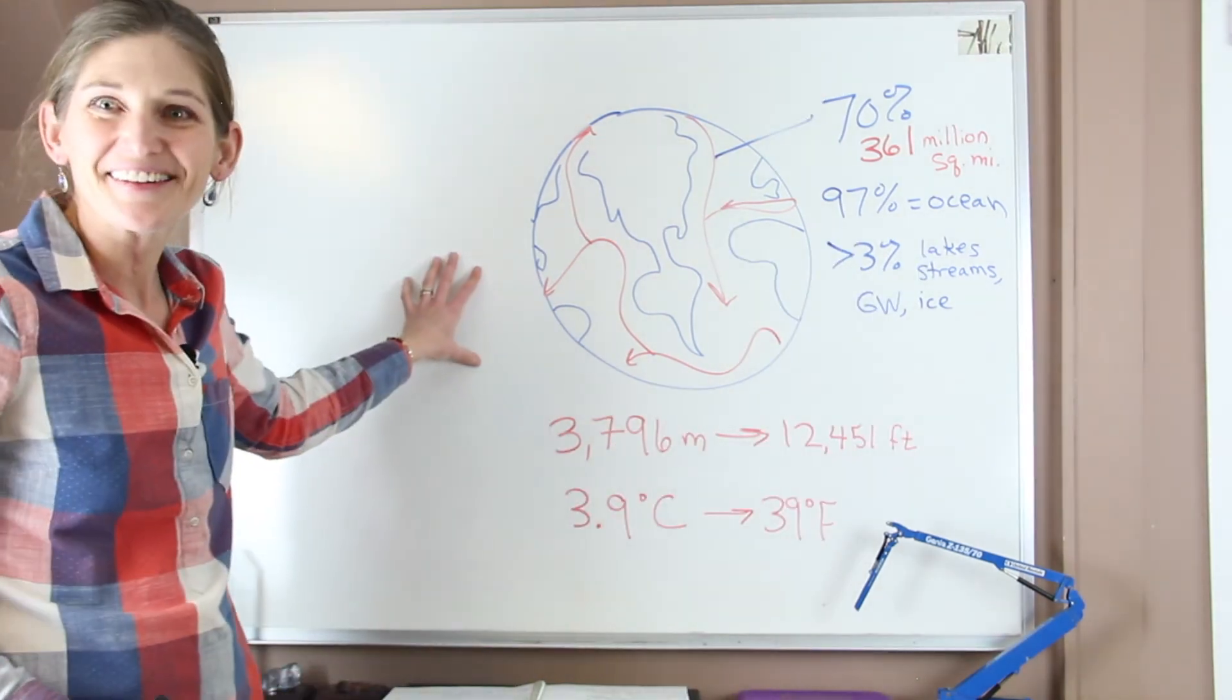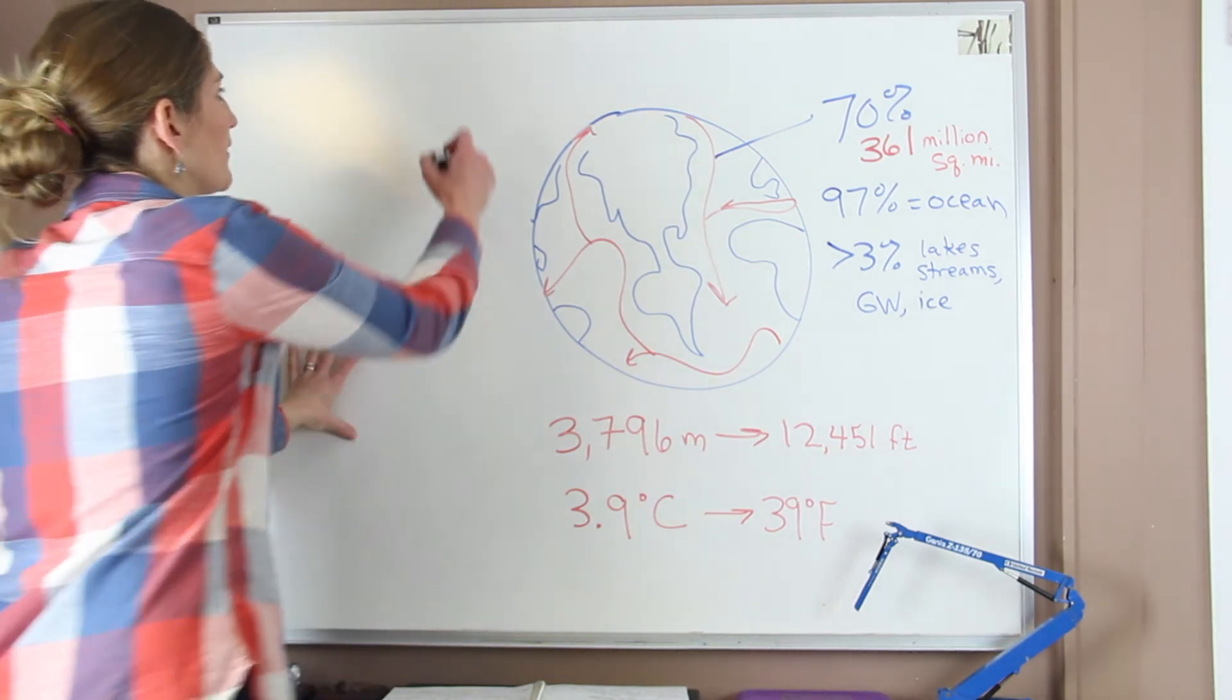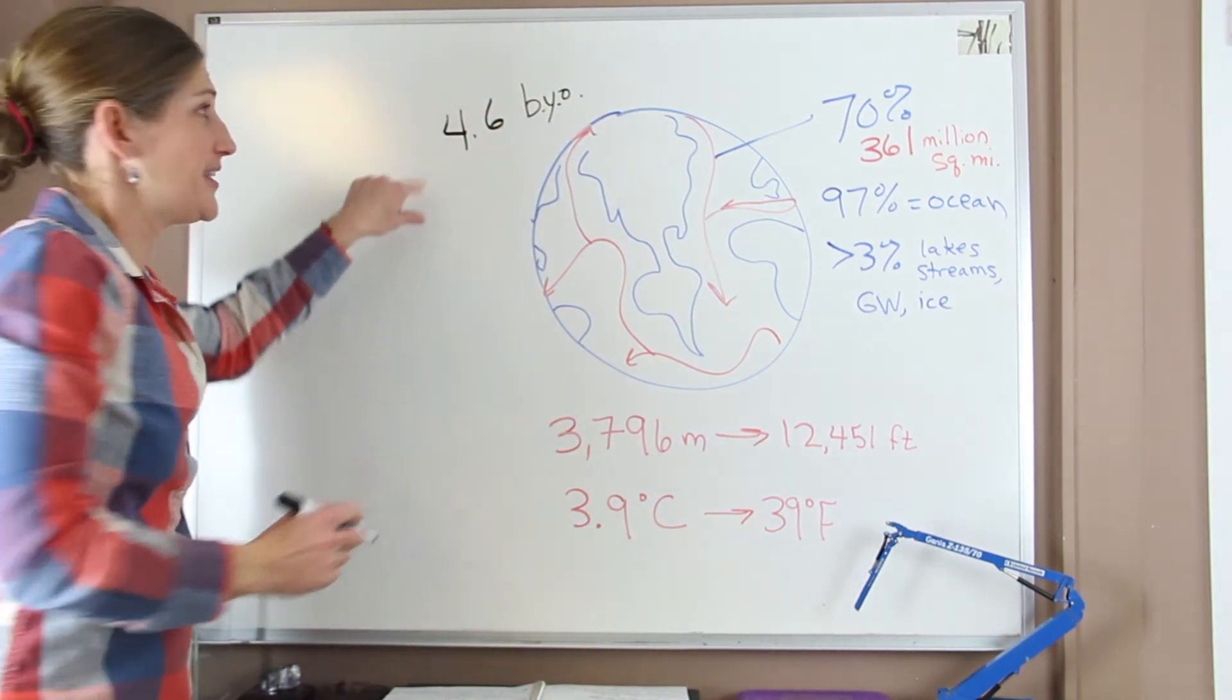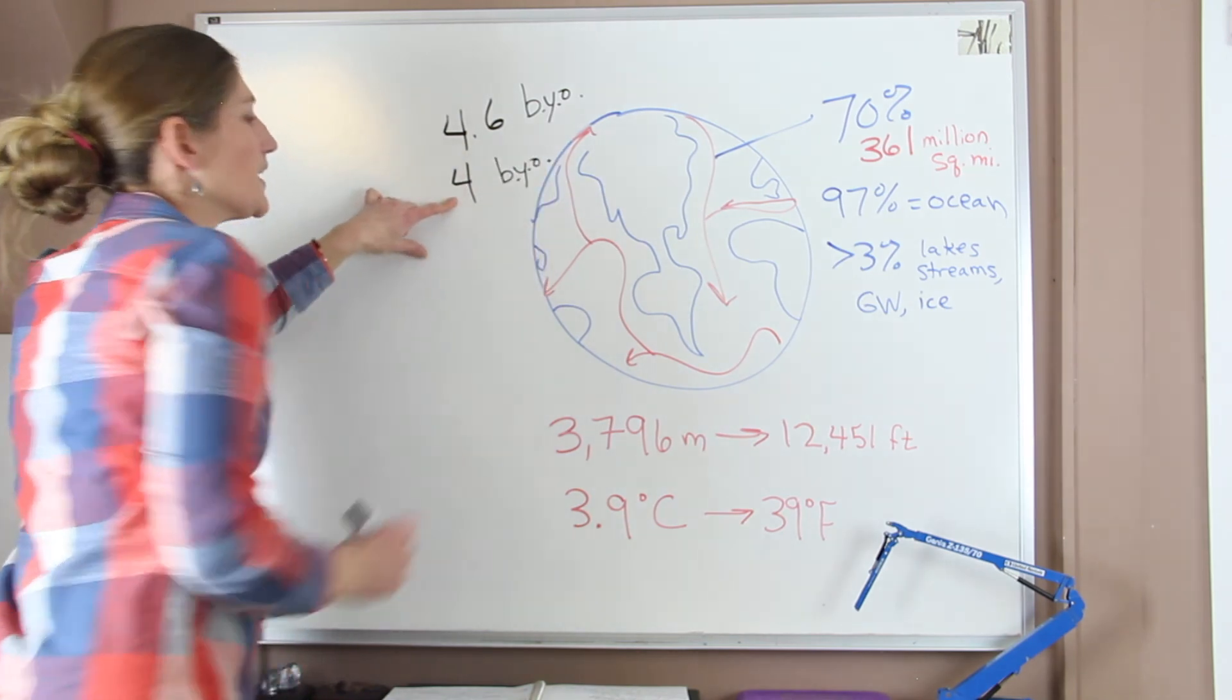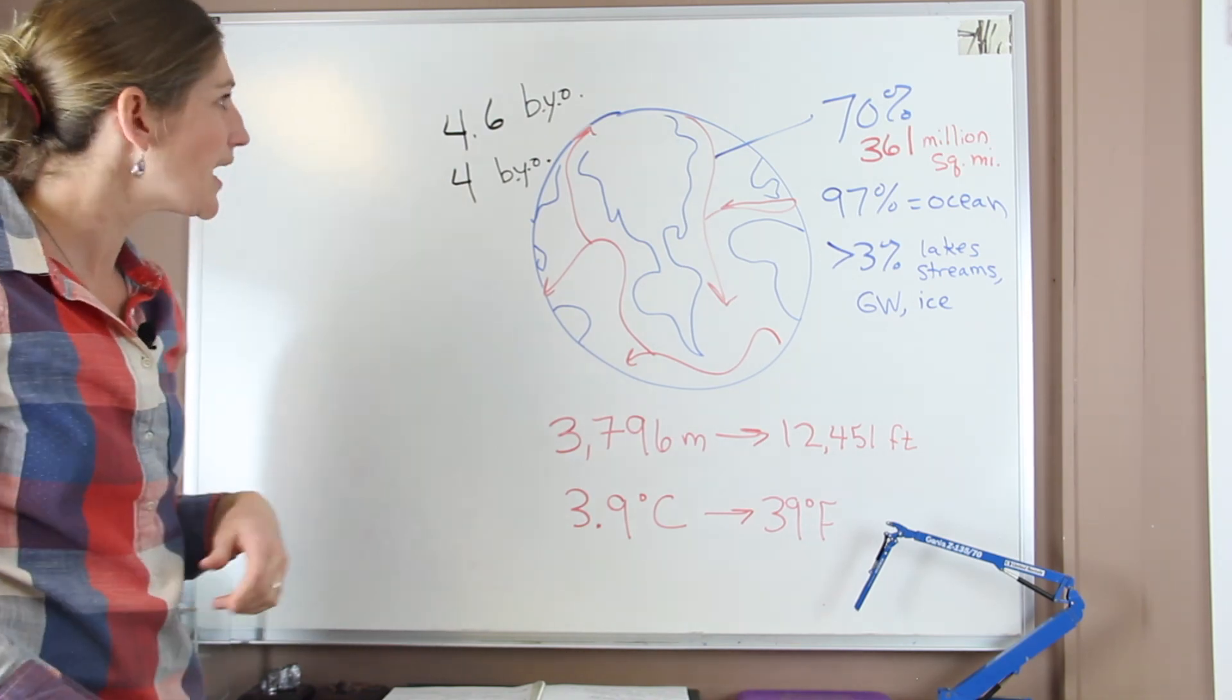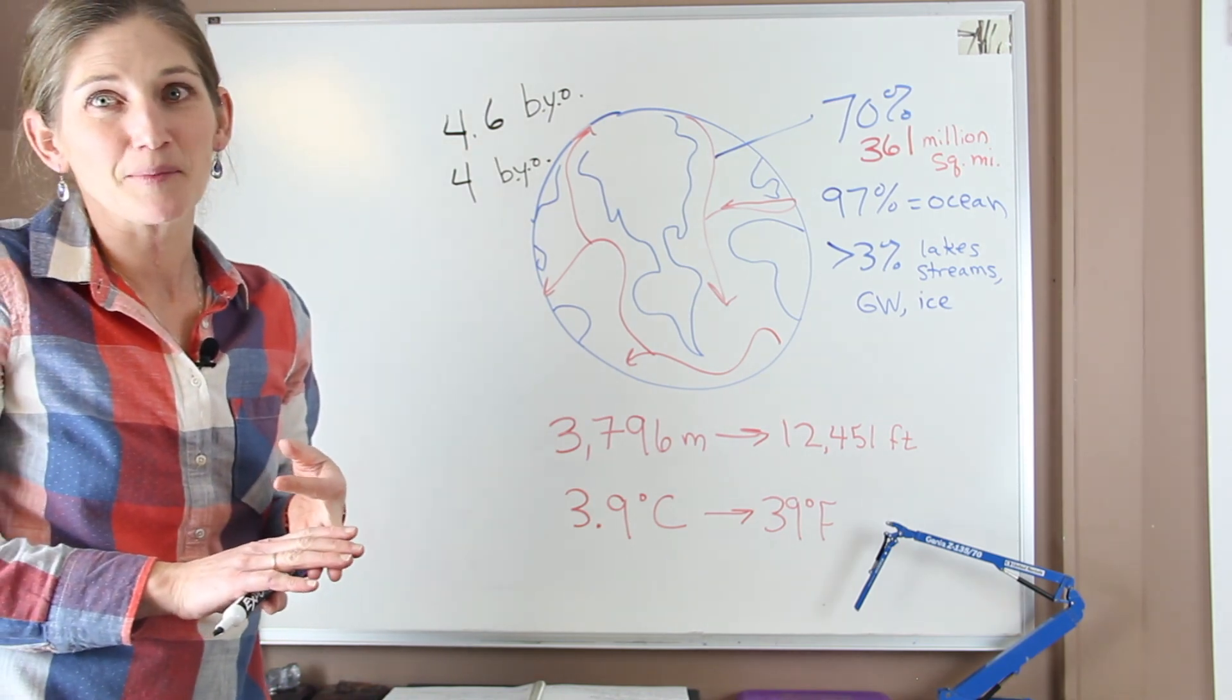Anyway. And the last thing, when we think about our earth and being this big ocean planet, we want to remember that the earth is 4.6 billion years old. Okay. The oceans themselves are 4 billion years old. So they've been around pretty much most of the time since the earth started to form. Anyway, so that's a quick glimpse at what oceanography is, and the oceans and why they're important.